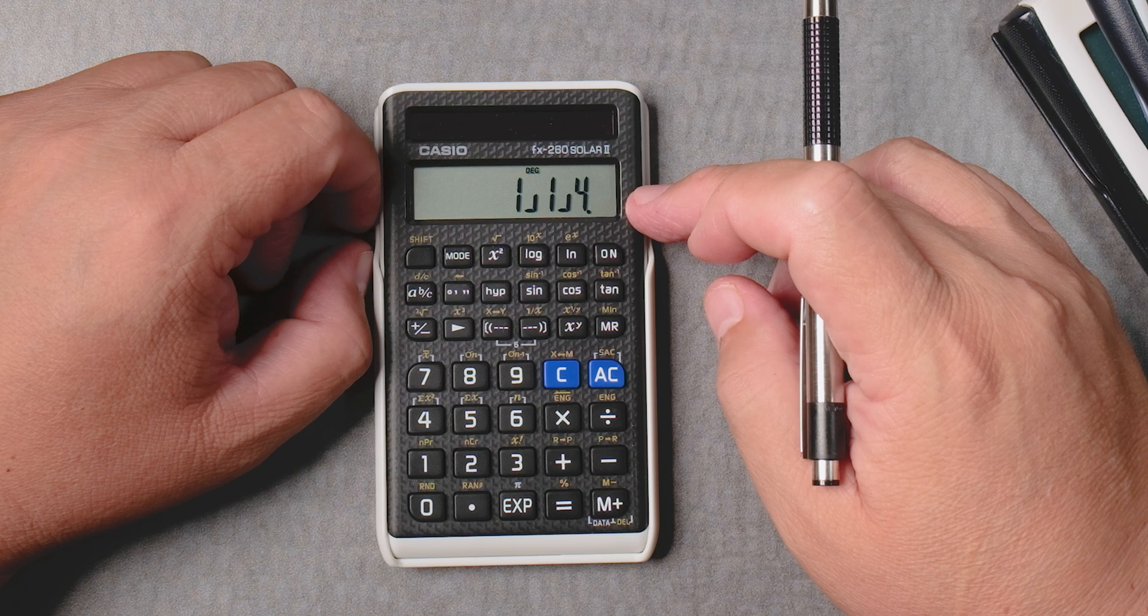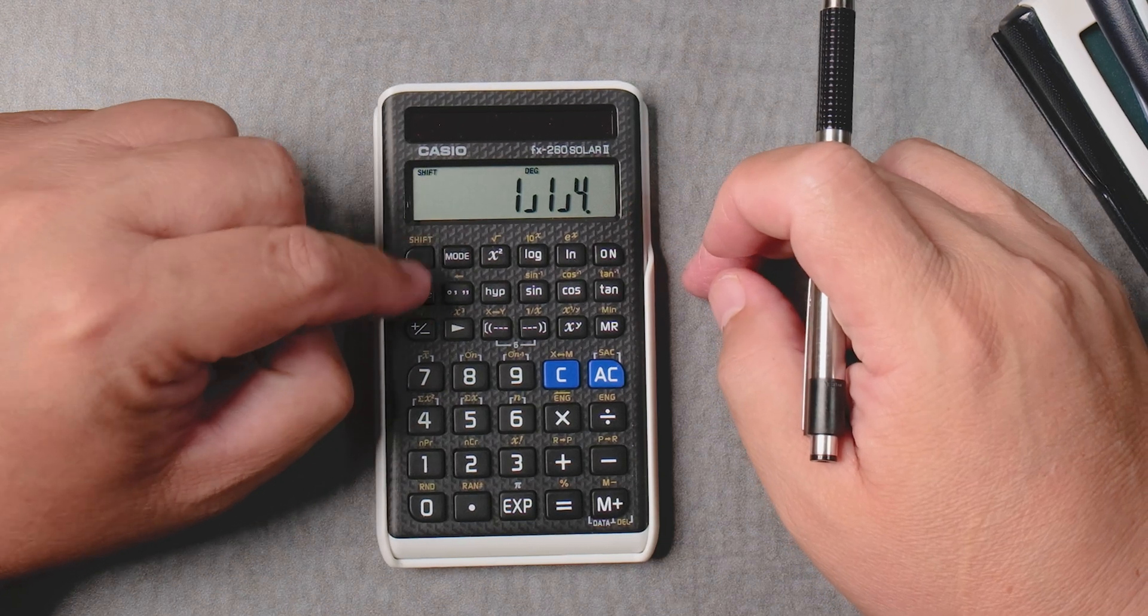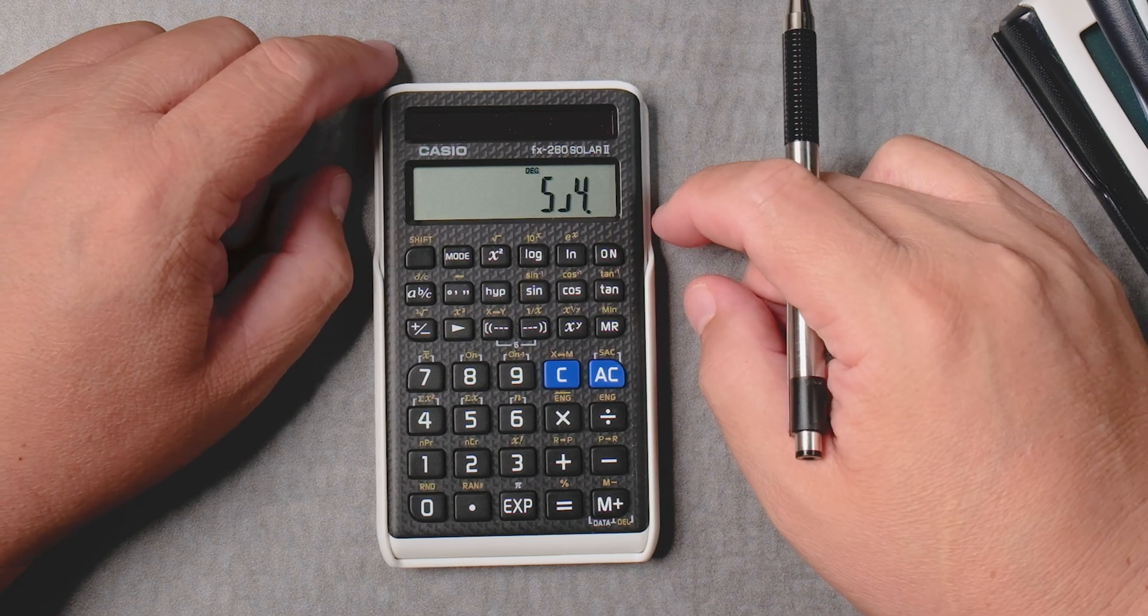Let's say I want the improper fraction. Shift, ABC button, automatically changes it.